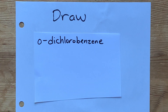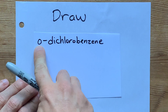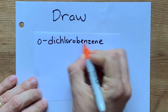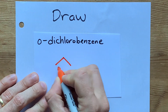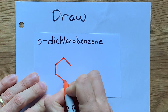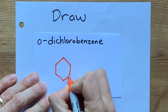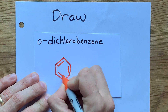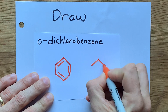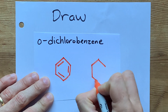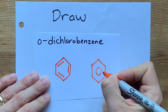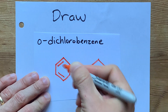Draw ortho-dichlorobenzene — that 'O' is for ortho. We're going to start with the benzene, which is a hexagon with alternating double and single bonds. You're also allowed to draw this often with a circle inside to show resonance.